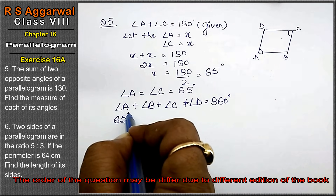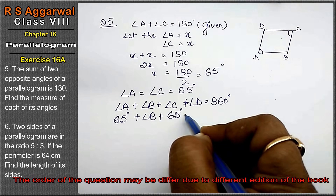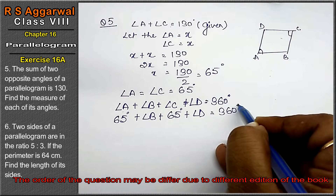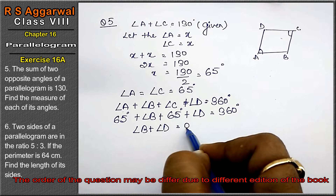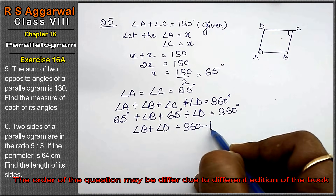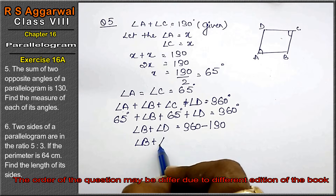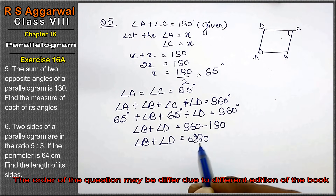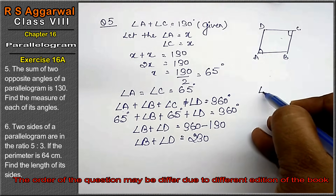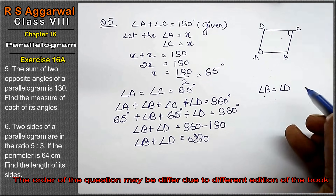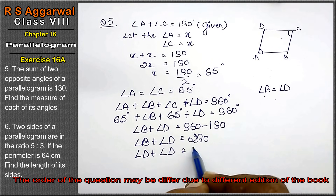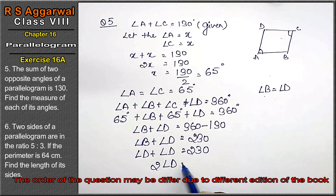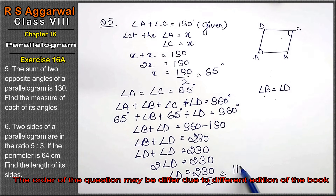Angle A is 65 degrees and angle C is 65 degrees. So angle B plus angle D equals 360 minus 130, which is 230 degrees. Now we know that opposite angles are equal, so angle B equals angle D. Therefore angle D plus angle D equals 230, so 2 times angle D equals 230, and angle D equals 230 divided by 2, that is 115 degrees. So angle B equals angle D equals 115 degrees.